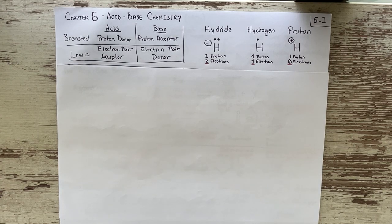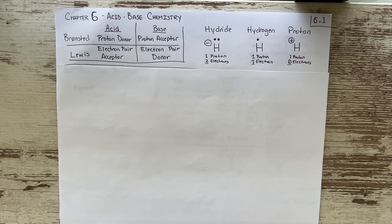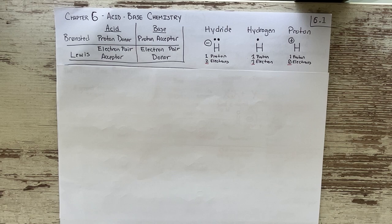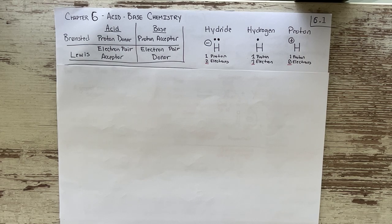Good morning. This is going to be the first lecture for chapter six, which goes over acid-base chemistry. Acid-base chemistry is kind of the foundation of all reactions that we're going to study in this class, and they all involve more or less the same type of electron movement that we will go over in this chapter.